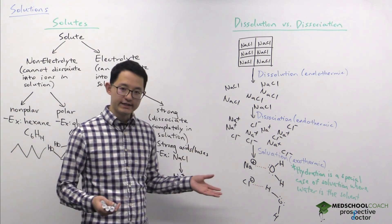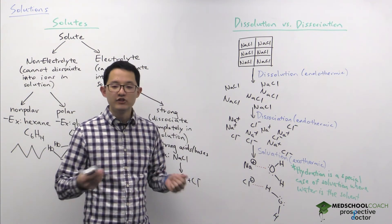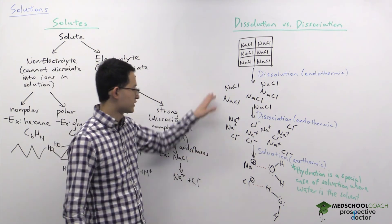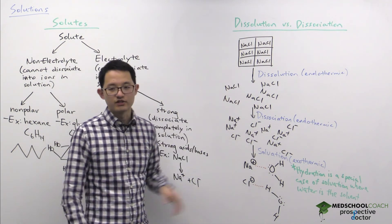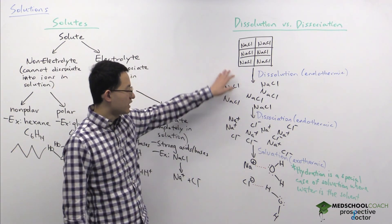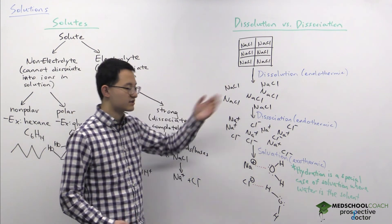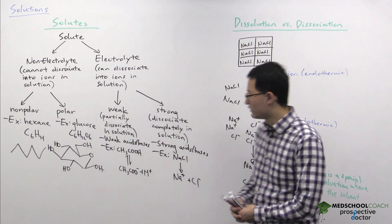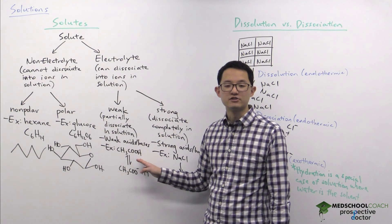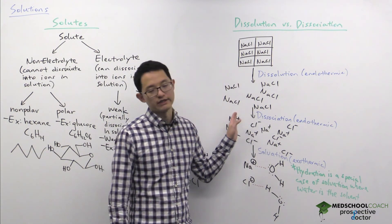To summarize: dissolution is separating a solute into individual molecules where atoms within each molecule are still attached — sodium is still attached to chlorine. Dissociation is breaking the ionic bond. Importantly, there's not necessarily a correlation between dissolution and dissociation. For example, acetic acid is highly polar so it dissolves completely in solution, but because it's a weak electrolyte it only partially dissociates.